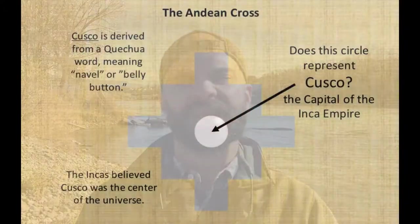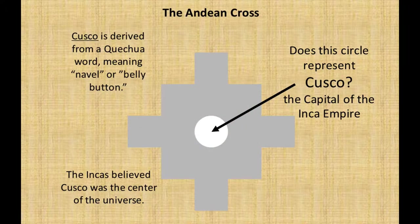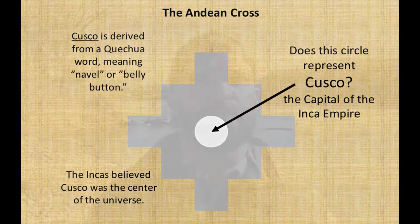Cusco is derived from a Quechua word meaning navel or belly button, and Cusco was believed by the Incas to be the center of the world or the center of the universe. So it makes sense that this cross would be an axis mundi depicting the entire universe, with Cusco — the heartland of the Inca Empire — at its very center. That was the one consistent point I saw repeatedly.